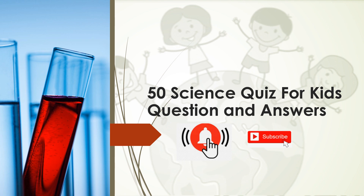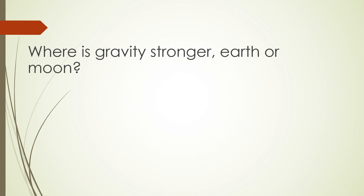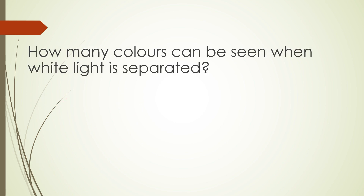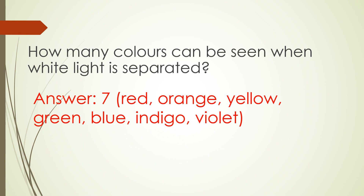Where is gravity stronger — Earth or Moon? Answer: Earth. How many colors can be seen when white light is separated? Answer: 7. They are red, orange, yellow, green, blue, indigo, and violet.